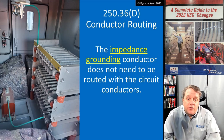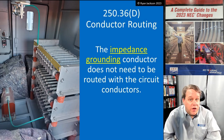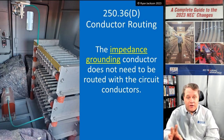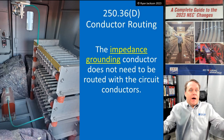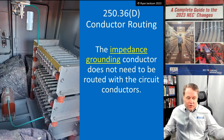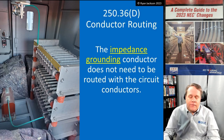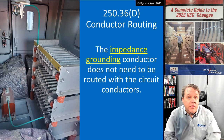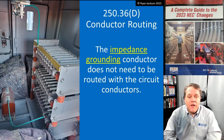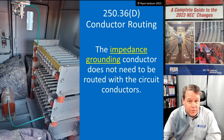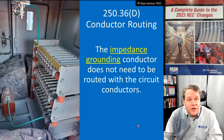The grounding impedance conductor does not need to be routed with the circuit conductors. That drives people insane the first time they see it - you've got this wire off by itself and they say, 'Wait, doesn't 300.3 say all conductors have to be grouped together?' It's fine - there's no reason to route this with the phase conductors. So there you go: 250.36 impedance grounded systems. Nice job by Code Making Panel 5 - love what you guys did on this one.